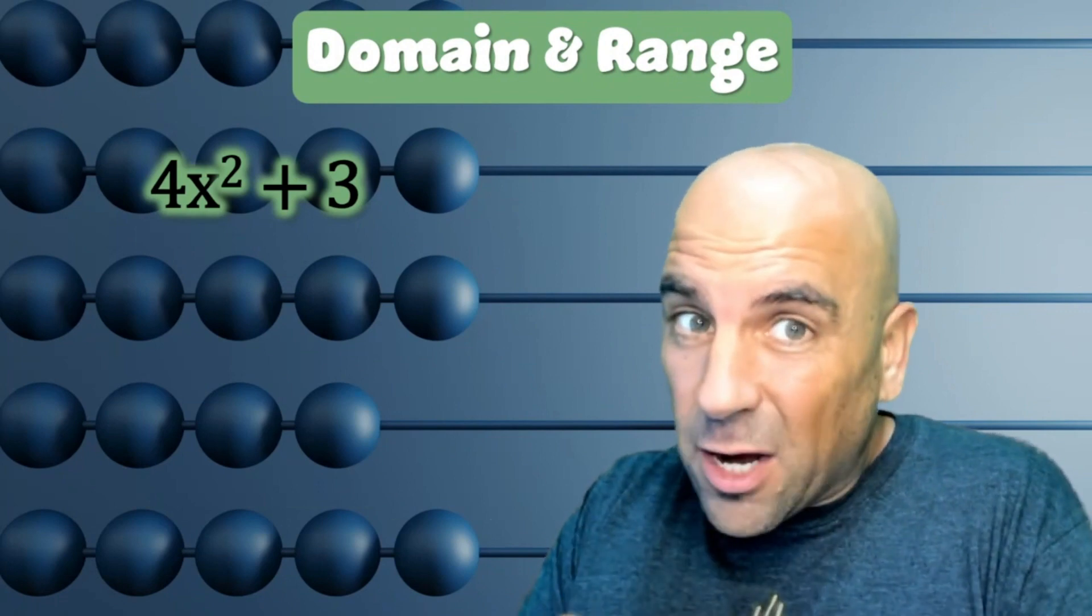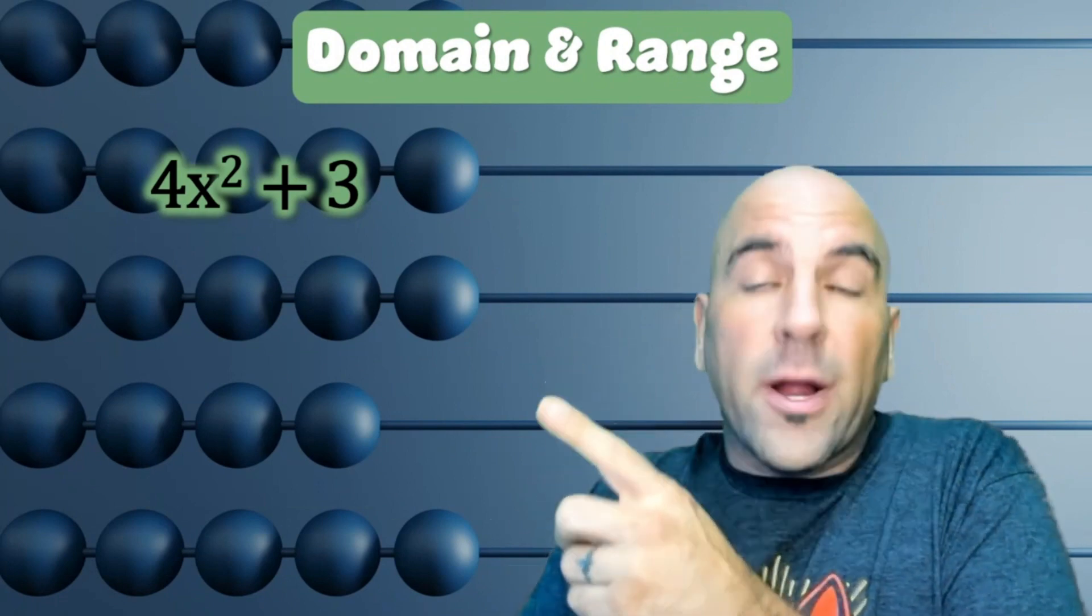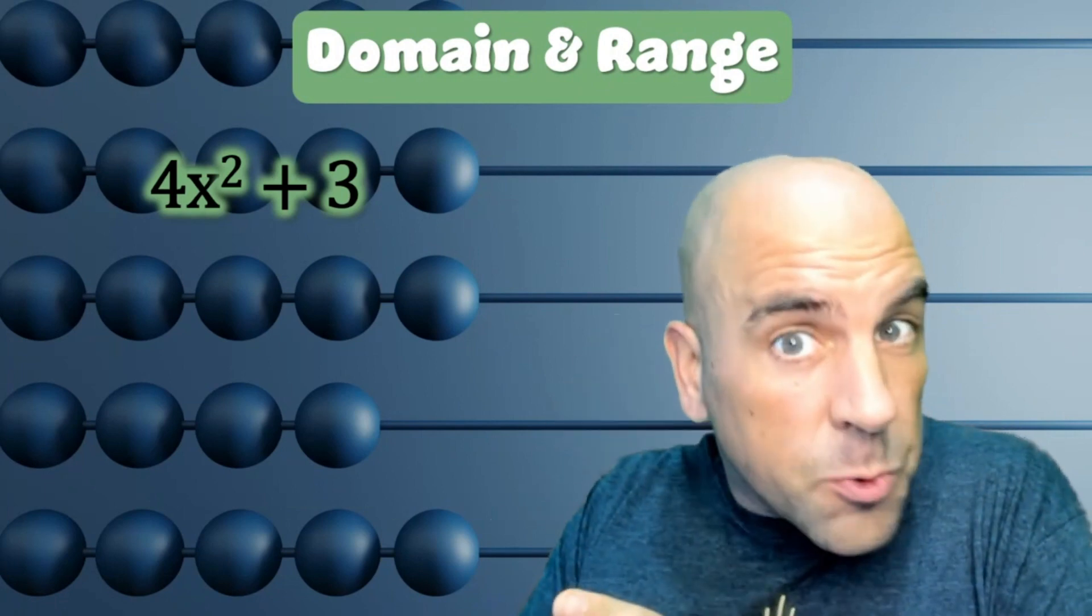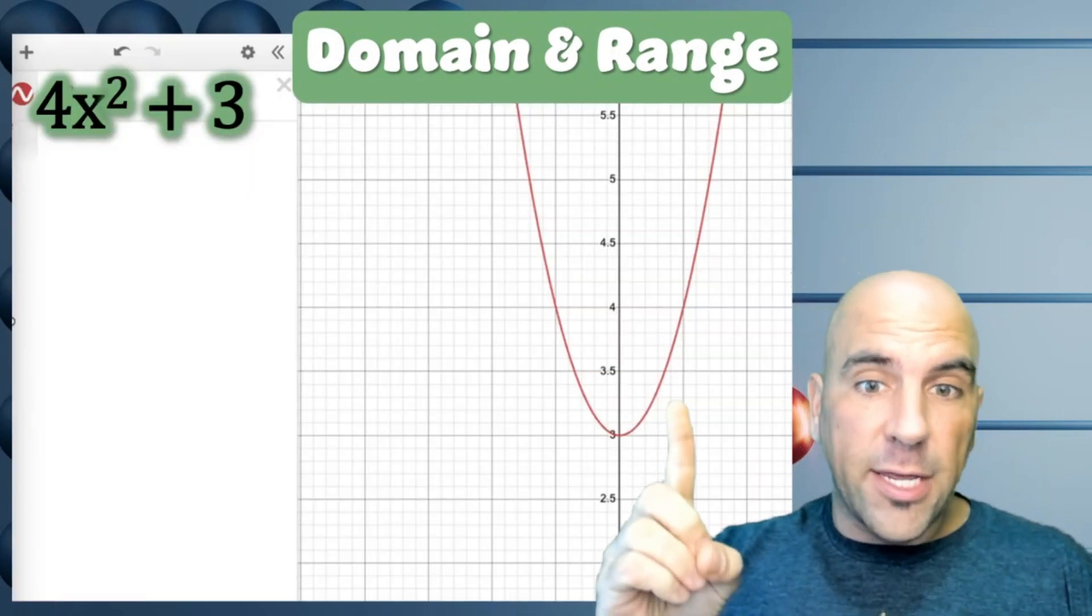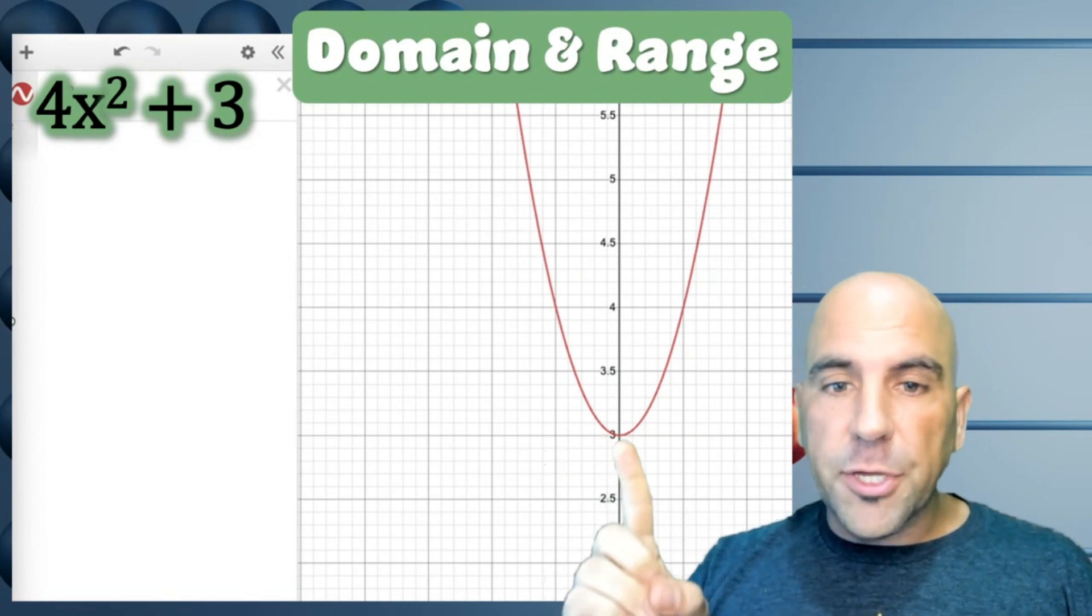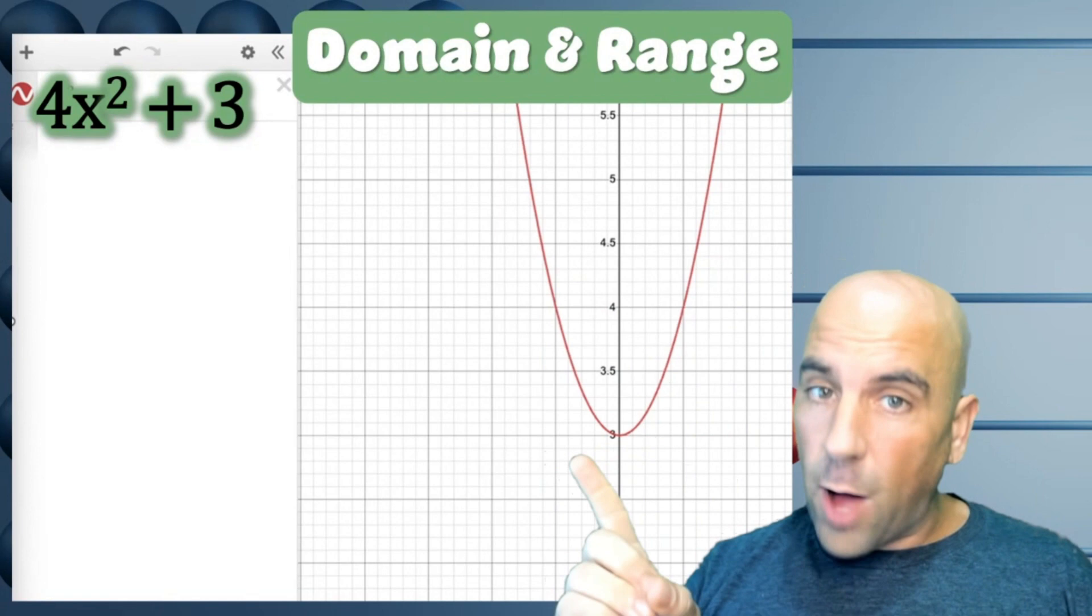Another equation that you have to be careful on is one like this: 4x² + 3. Let's take a look at its graph so I can explain it visually. So check this out. Here is the parabola for this quadratic equation here, but you'll notice the range doesn't go below three. Why is that?